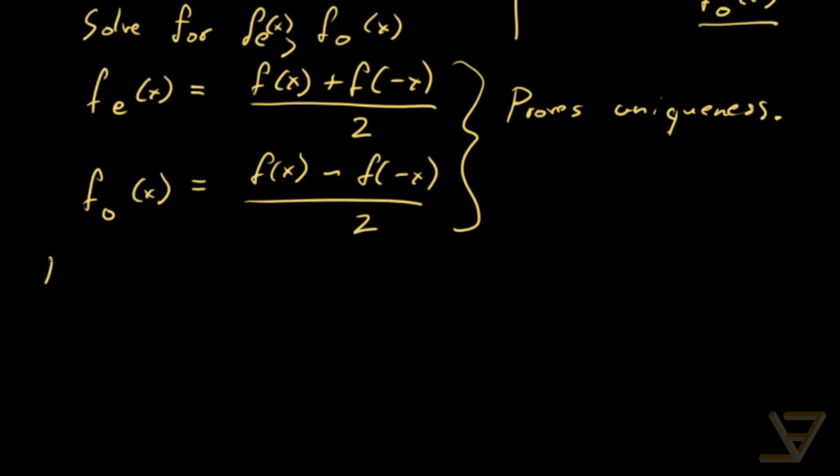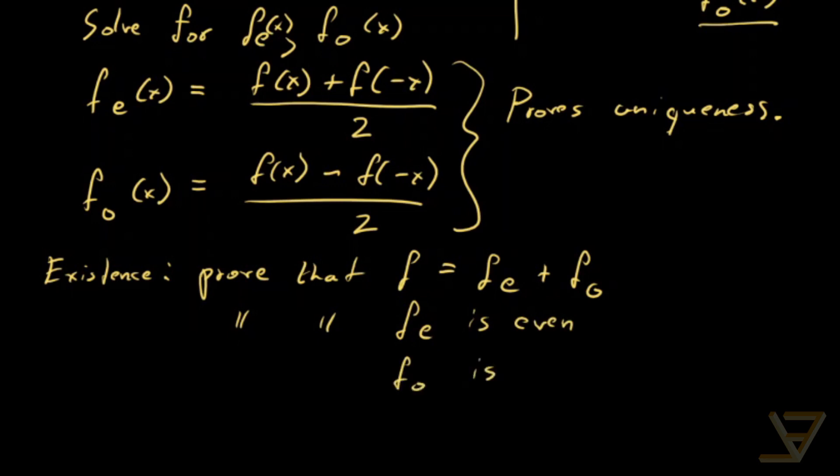All's left to do is prove that this is in fact a decomposition into even and odd functions. So what's left is existence. We have to prove that f is equal to f_e plus f_o and we also have to prove that f_e is even and f_o is odd based on these definitions and that should be quite doable so let's do that.